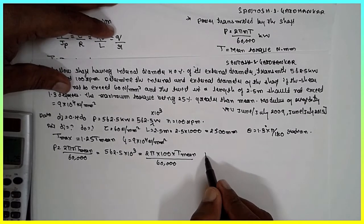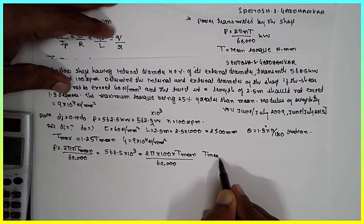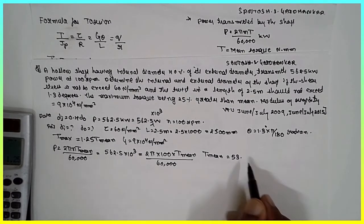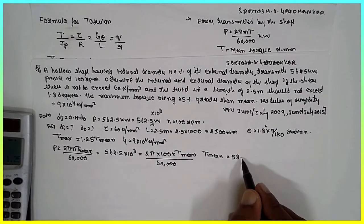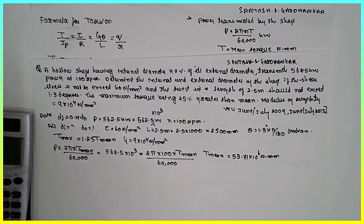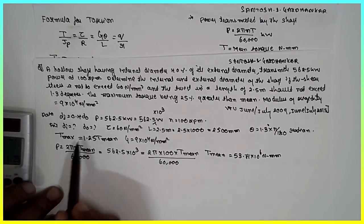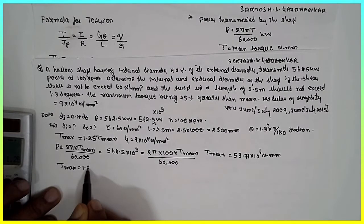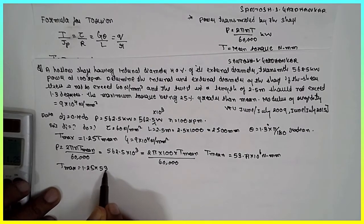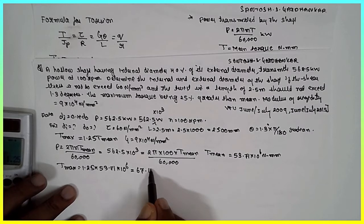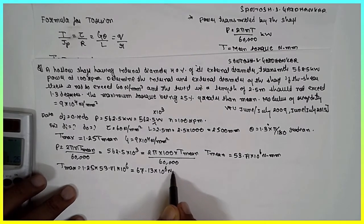Cross multiplying, T_mean = 53.71 × 10⁶ N·m. Substituting into T_max: T_max = 1.25 × 53.71 × 10⁶ = 67.13 × 10⁶ N·m.